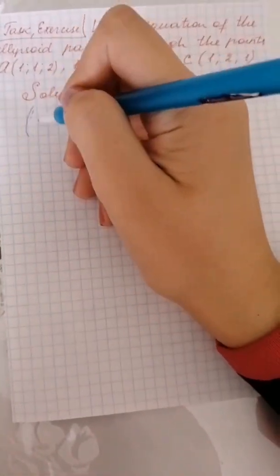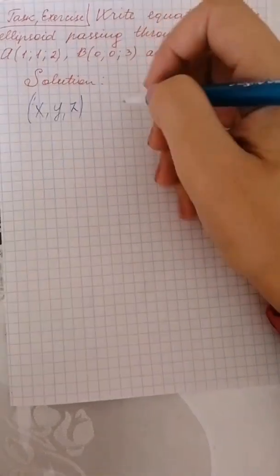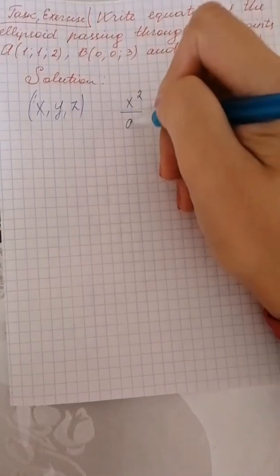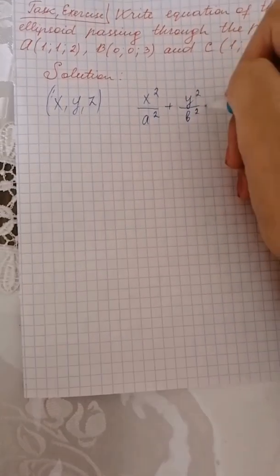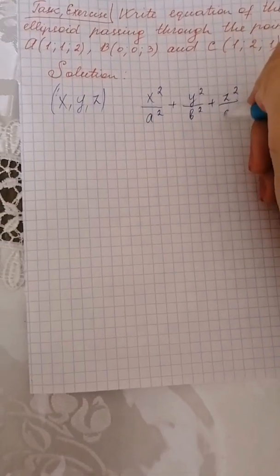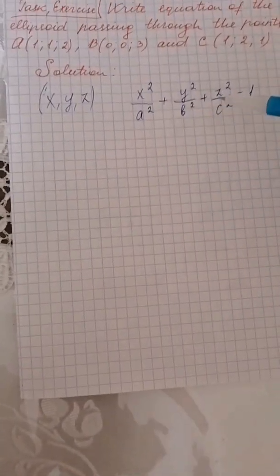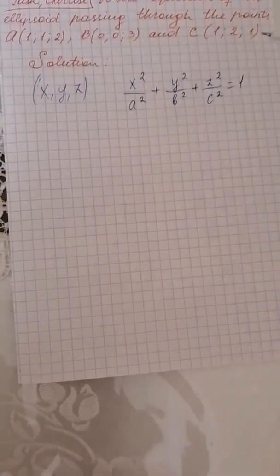The canonical equation of the ellipsoid passing through the point with coordinates x, y, z is: x squared over a squared plus y squared over b squared plus z squared over c squared is equal to 1. This is the canonical equation of the ellipsoid.